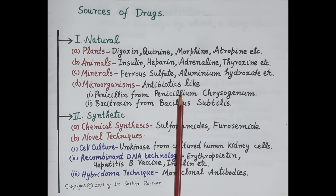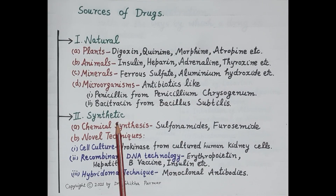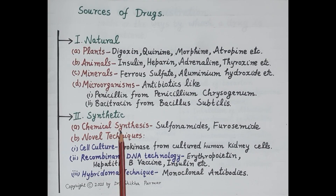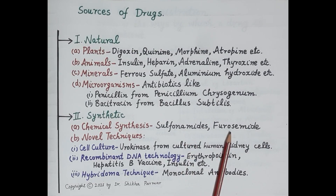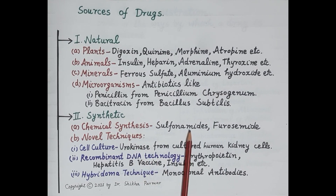Now let's talk about the synthetic sources of drugs. Around 90 percent of drugs are obtained by chemical synthesis — that is, drugs are synthesized in the laboratory using chemicals. For example, sulfonamides, which are antibacterial, and furosemide, which is a diuretic.